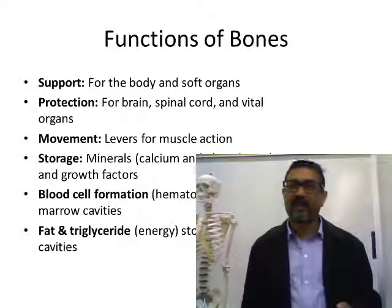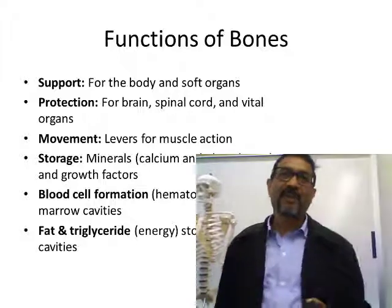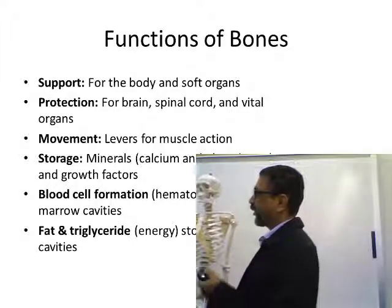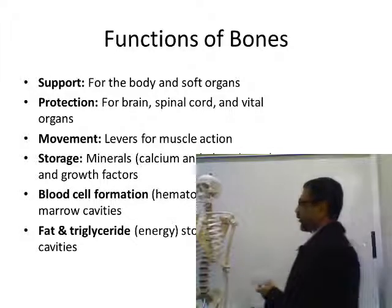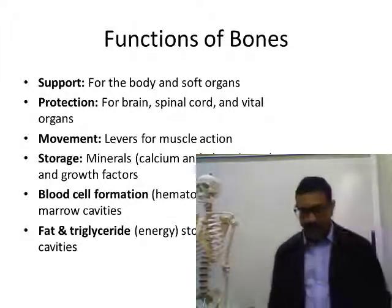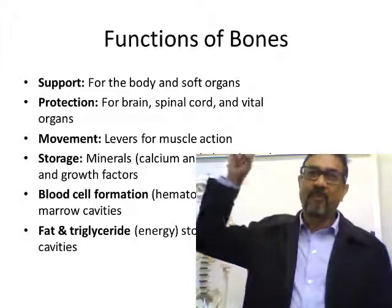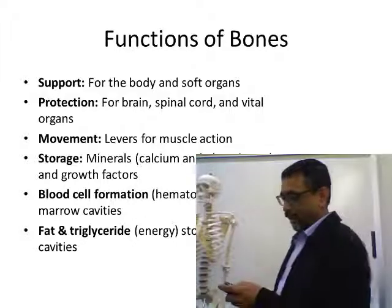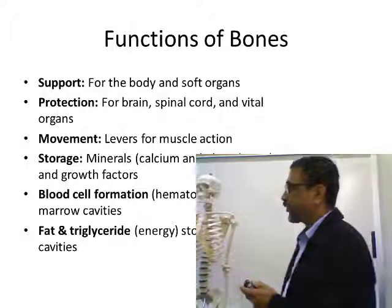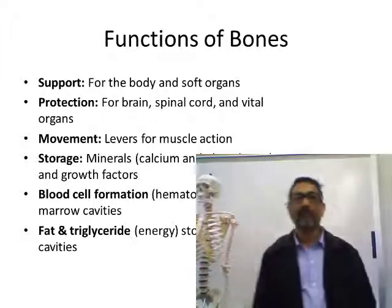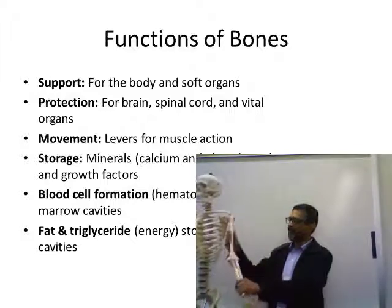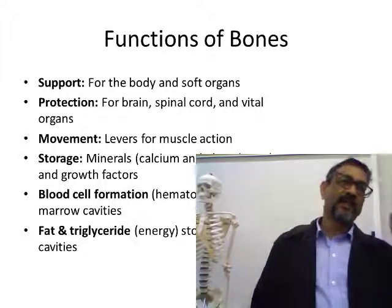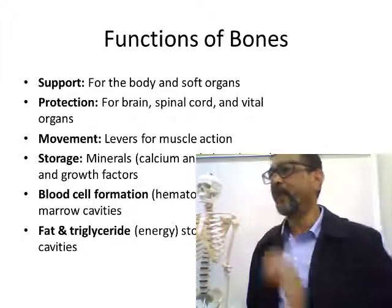A lot of minerals are stored inside the bones: calcium, phosphorus, and magnesium. Those important minerals are stored in the matrix of the bones. When your blood calcium concentration goes down, bones release calcium into the blood to bring it back up. Blood cell formation is another important function — bone marrow is located inside the bones and is the primary site for blood cell formation.